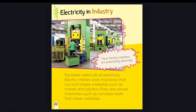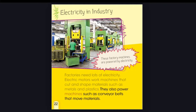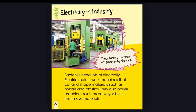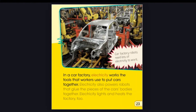Electricity in industry. Factories need lots of electricity. Electric motors work machines that cut and shape materials such as metals and plastics. They also power machines such as conveyor belts that move materials. In a car factory, electricity works the tools that workers use to put cars together. Electricity also powers robots that glue the pieces of the car's bodies together.